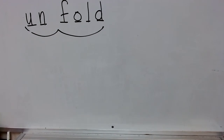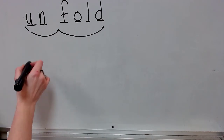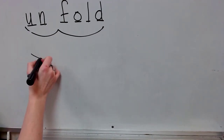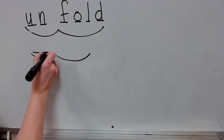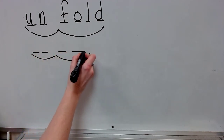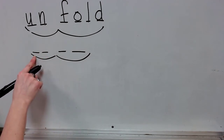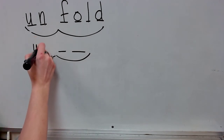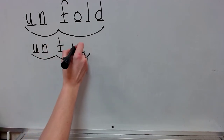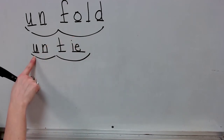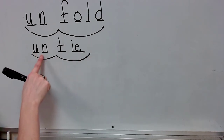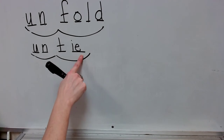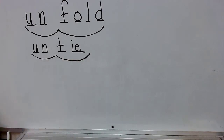The next word is untie. Our syllables: un-tie. Prefix is un, base word: t-i. Write the spelling for untie. Check it and correct it. Spell untie. Yes, untie.